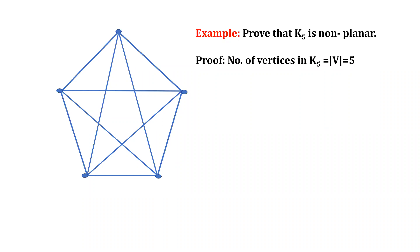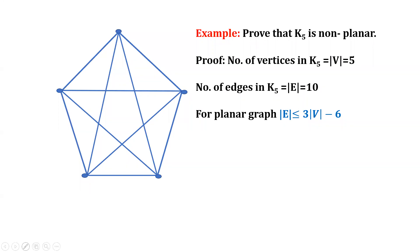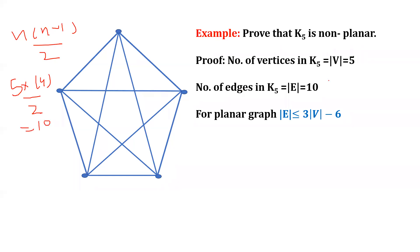First, count the number of vertices in this graph — they are 5. The number of edges is 10, which you can count manually or use the formula: a complete graph with n vertices has edges equal to n(n-1)/2. Substituting n = 5, we get 5×4/2 = 10 edges. Now, if we suppose that K5 is planar, then we must have the inequality e ≤ 3v − 6.